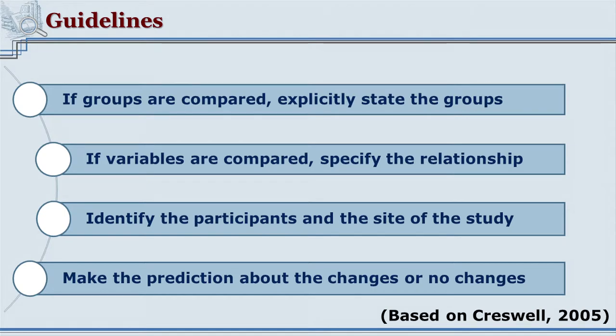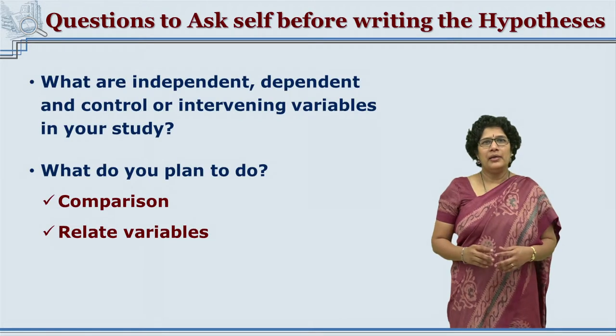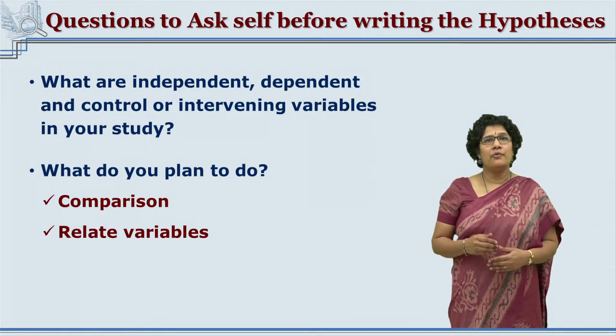The last guideline is to make predictions about the tentative result — for example, it could be difference or no difference. If it involves higher or lower performance, one would speak in terms of higher performance or lower performance. If it is a correlation between two variables, one would speak in terms of the variables being highly correlated or there being no correlation between them.